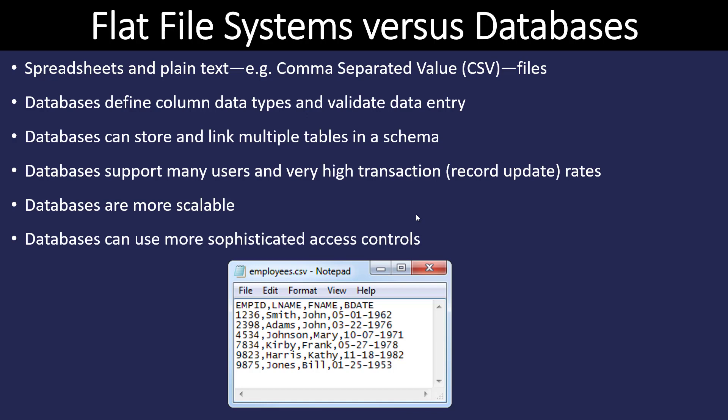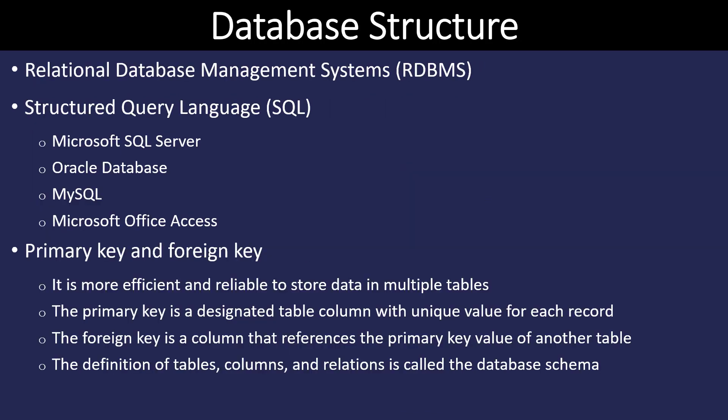Databases will support many users at a very high transaction rate, and databases are more scalable and can use more sophisticated access controls. When we have a database that has multiple tables related to one another, we use something called a Relational Database Management System, or RDBMS, to maintain and query data. Some common examples are Microsoft SQL Server, Oracle, MySQL, and Microsoft Office Access.